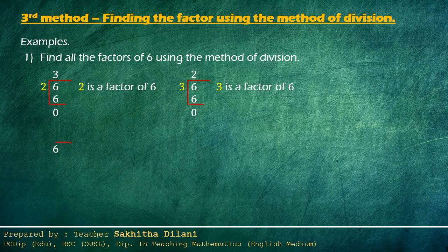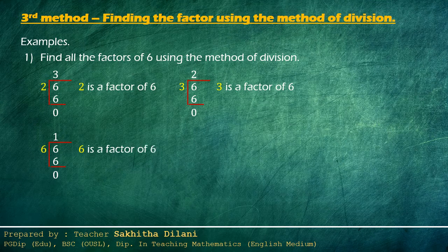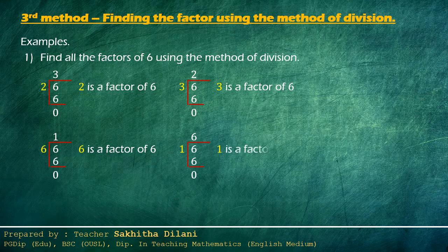Let's divide six by six. It gives one and there is no remainder. So six is a factor of six. Let's divide six by one. It gives six and there is no remainder. Therefore, one is a factor of six.